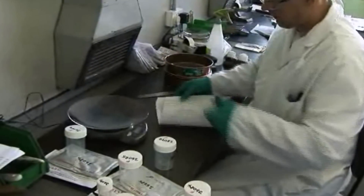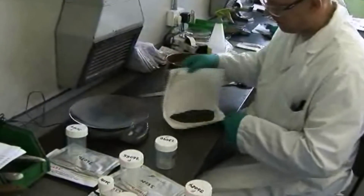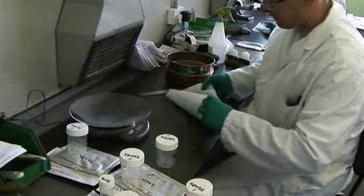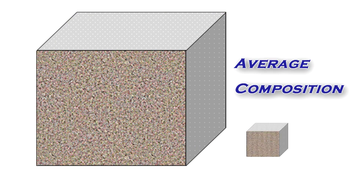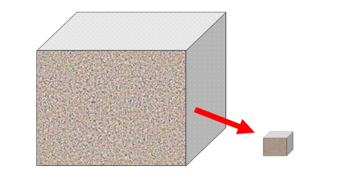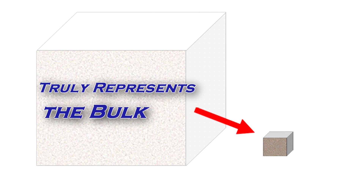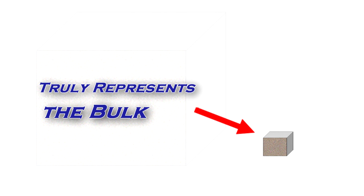A true sample is a small sample of a mass which represents the average composition of the mass, or simply stated, truly representative of the bulk.